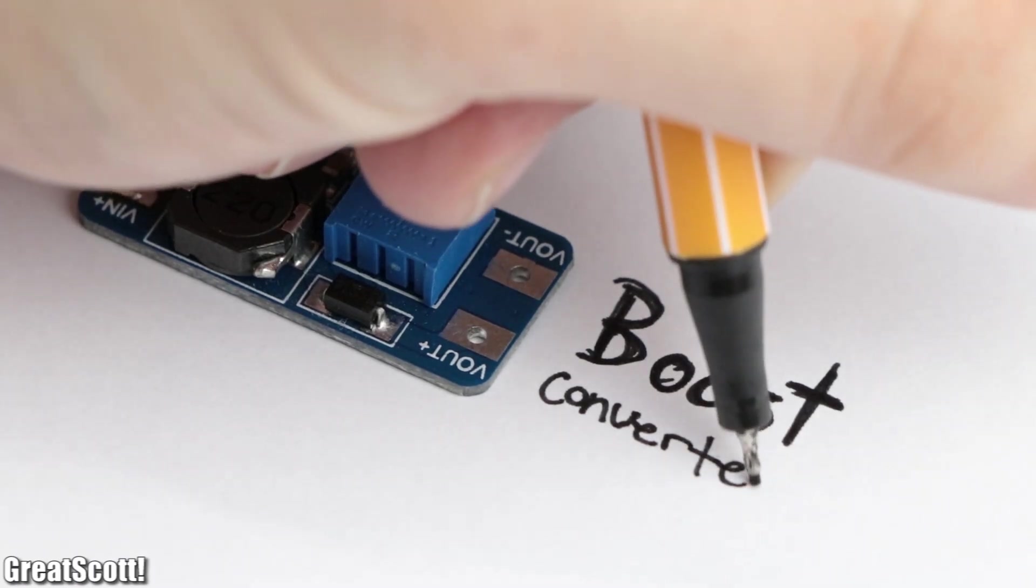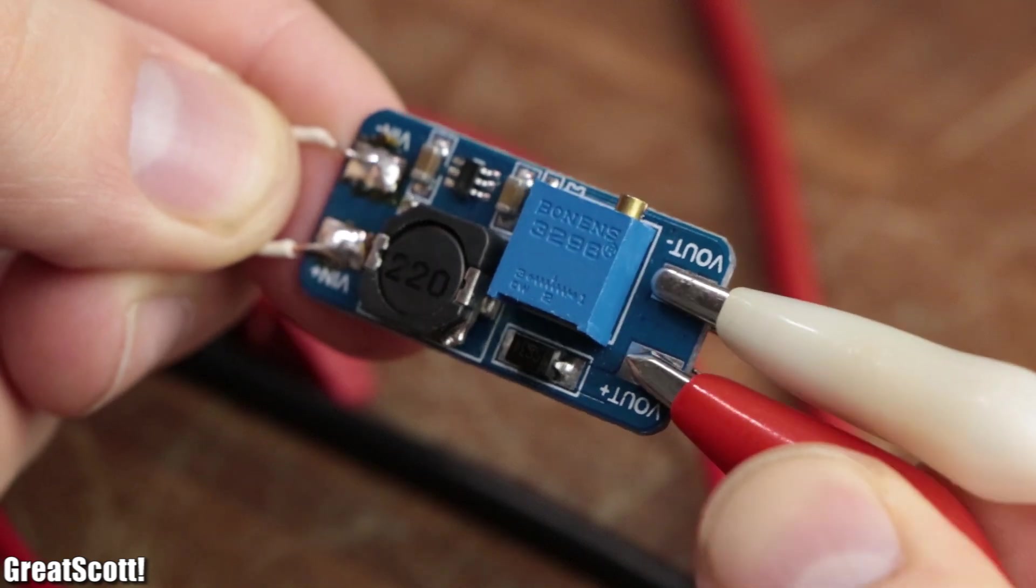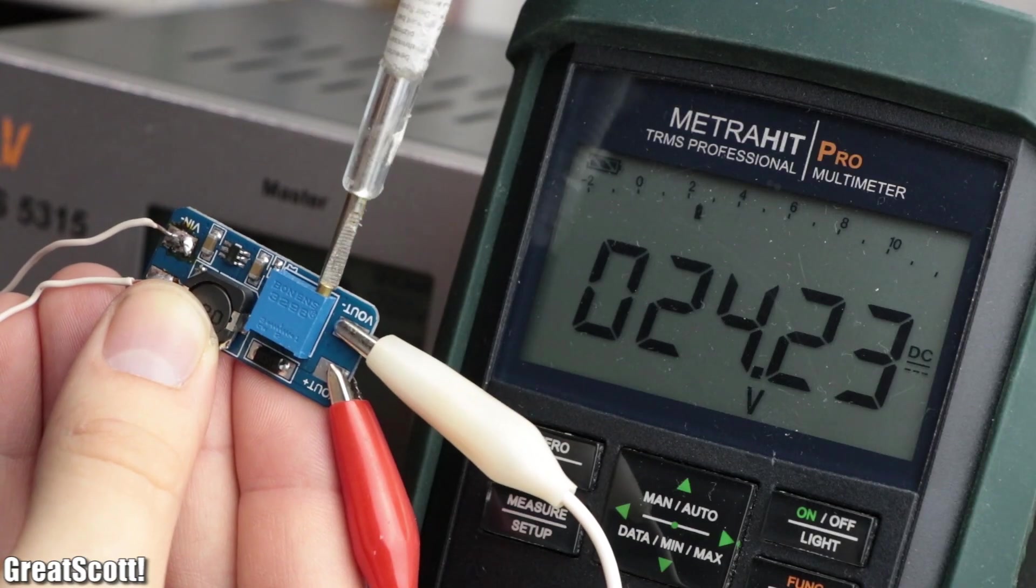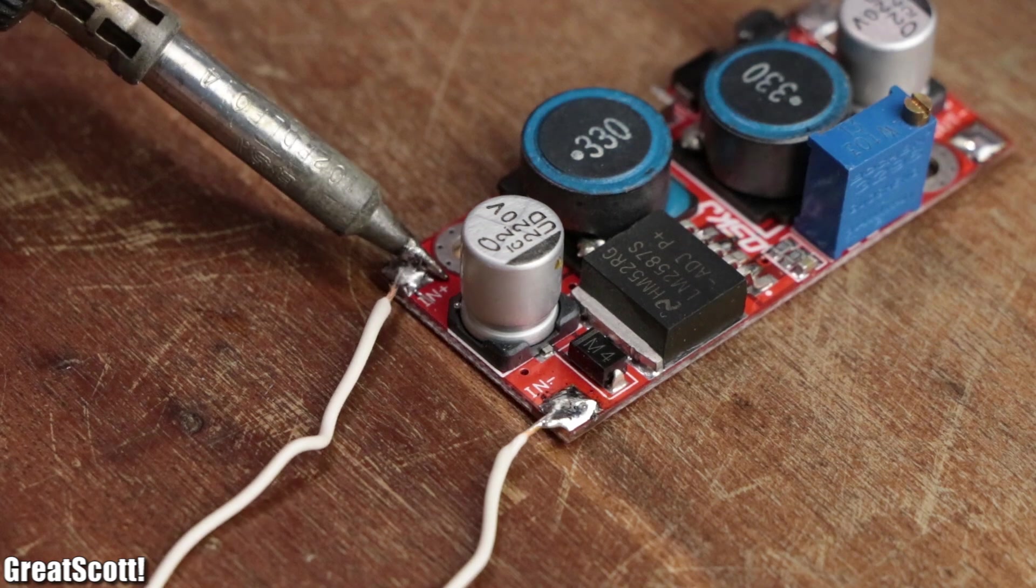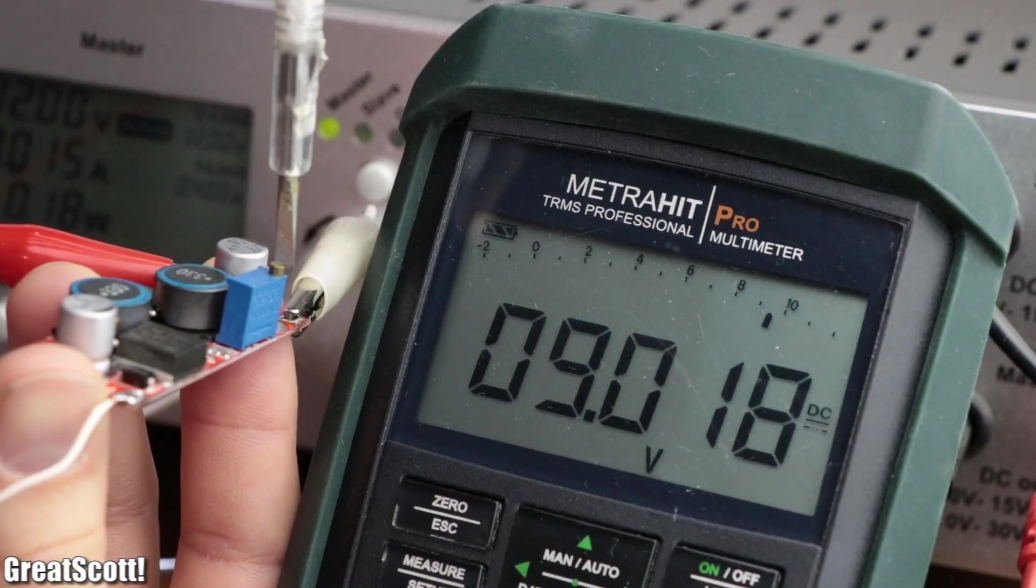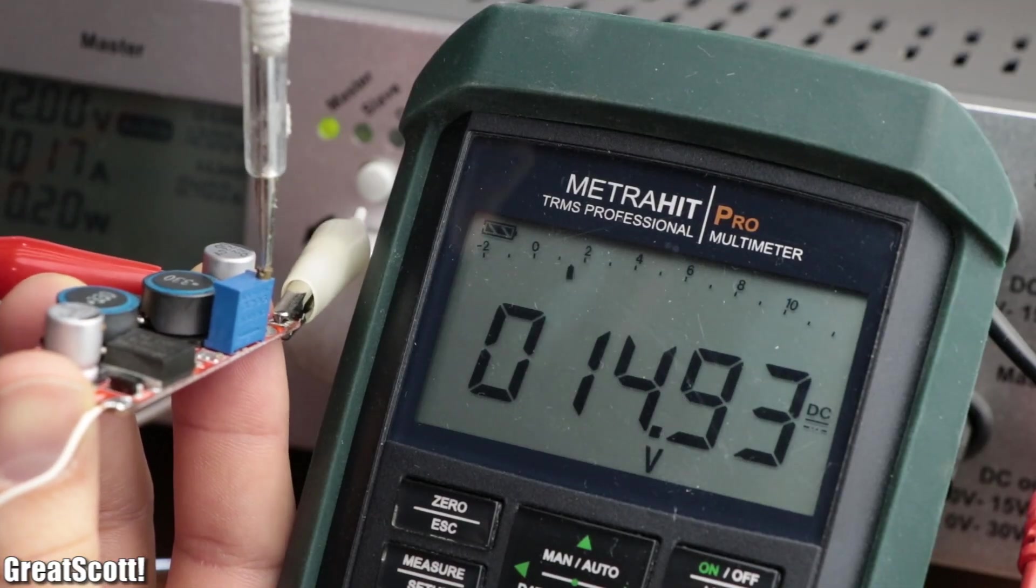The second one is a boost converter, which can output a voltage higher than its input voltage. And the third one is a buck boost converter which, like the name implies, can output a voltage lower and higher than its input voltage.